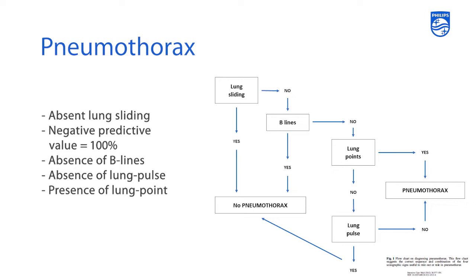When evaluating a patient for a pneumothorax, one of the key factors in lung ultrasound evaluation is assessment of lung sliding. If a patient has absent lung sliding, there is a negative predictive value of about 100% in that patient population. What that means is that if you do see lung sliding, then the patient does not have a pneumothorax. But if lung sliding is absent, there are other questions you have to ask yourself and other portions of the exam that need to be delineated in order to give a patient a diagnosis of pneumothorax.